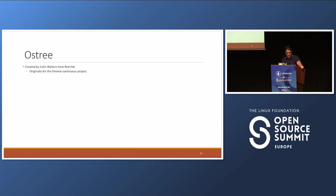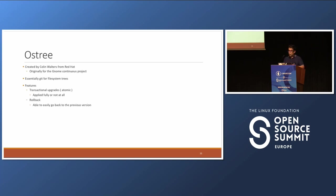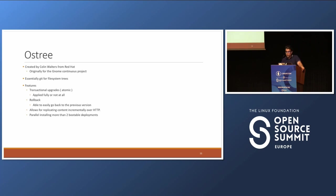OSTree was originally created by Colin Walters from Red Hat, originally for the GNOME Continuous project. You can think of OSTree as Git for file system trees. Some of the features: transactional upgrades — either it's fully applied or not at all. Rollback — once you're on the latest commit, if there's an issue you can roll back to a previous version. OSTree allows for replicating content incrementally over HTTP, parallel installs of more than two bootable deployments, binary history on the client and server, flexible support for multiple branches and repositories, and it's designed to be resistant to sudden power loss.